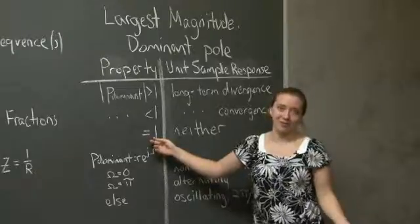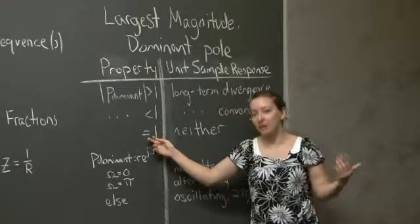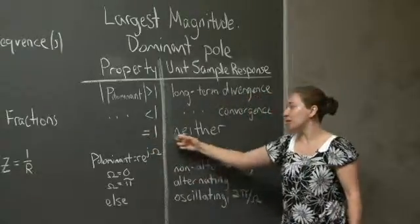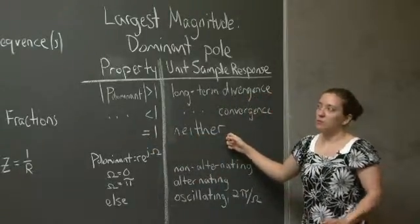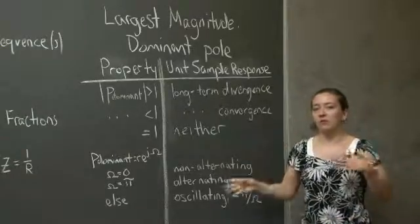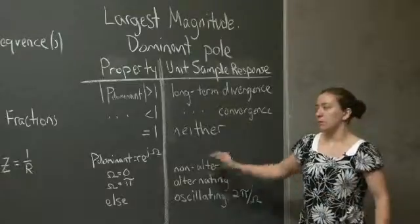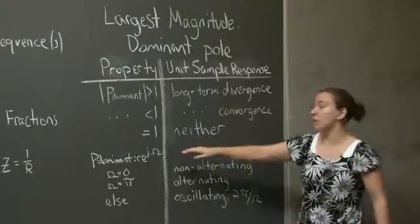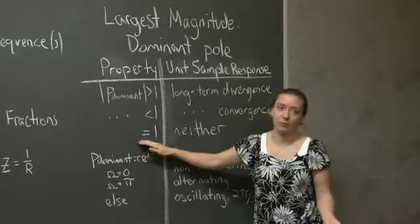To cover the only category we haven't talked about: if your dominant pole is actually equal in magnitude to 1, then you're not going to see convergence or divergence. This is one of the places where the magnitude of the scalar you end up multiplying your system by can become relevant. We're not going to focus on this situation too much, but it's good to know what happens when the magnitude of your dominant pole is equal to 1.